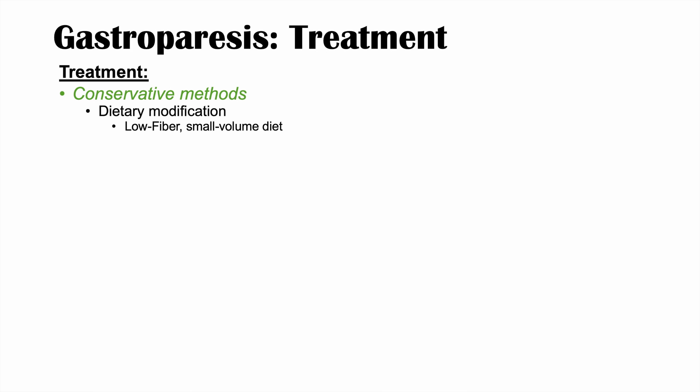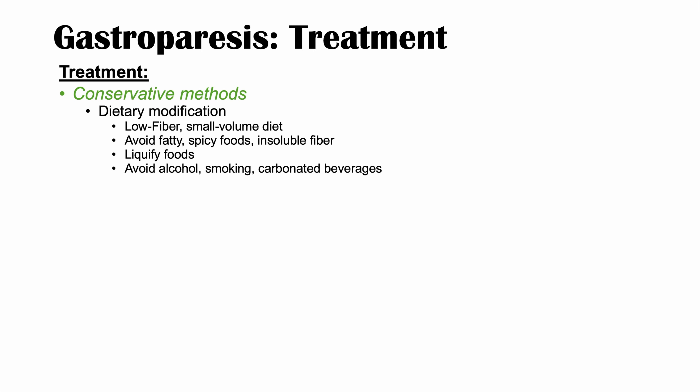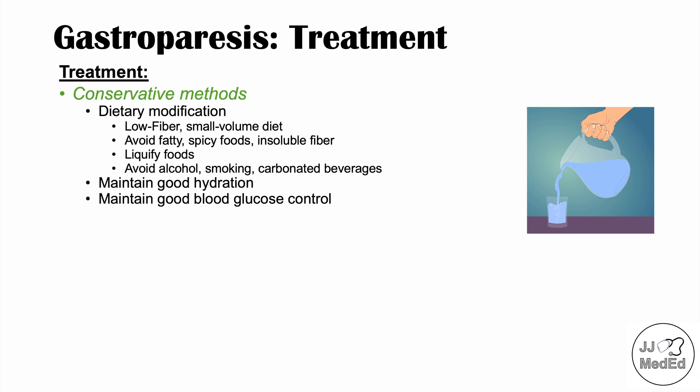Treatment of gastroparesis involves several methods. The first are conservative methods, including dietary modification — eating low fiber, small volume diets, and avoiding fatty or spicy foods or insoluble fiber. In severe cases, foods may need to be liquefied. You should also avoid alcohol, smoking, and carbonated beverages, as carbonated beverages can lead to gastric distension.